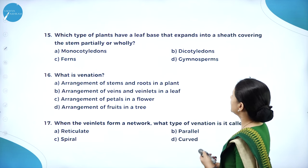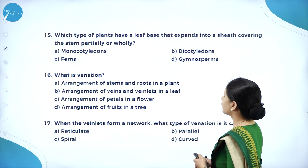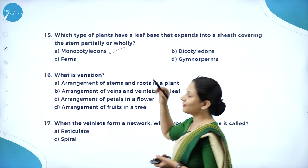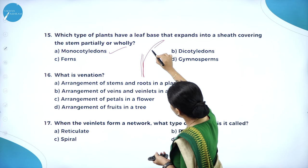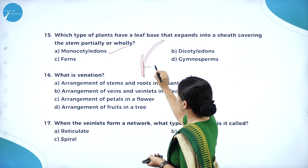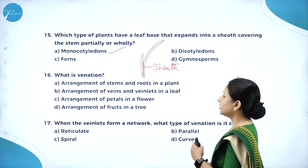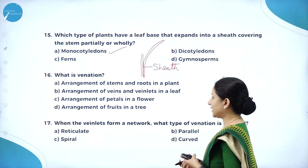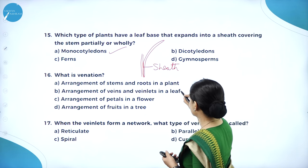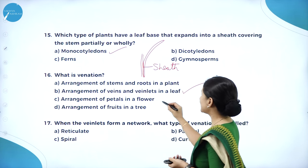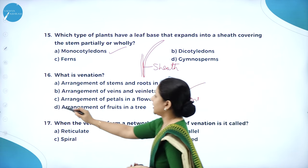Which type of plants have a leaf base that expands into a sheath covering the stem partially or wholly? Usually monocotyledons — as seen in grasses and banana, where the leaf blade forms a sheath around the stem. What is venation? It is the arrangement of veins and veinlets in a leaf. The arrangement of petals in a flower is called estivation. Option B is the right answer.